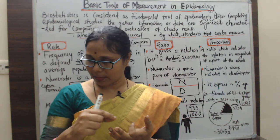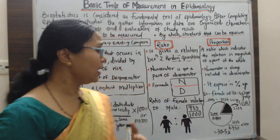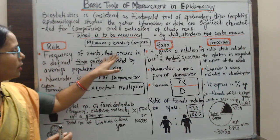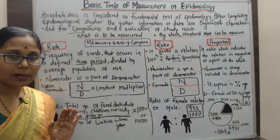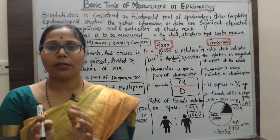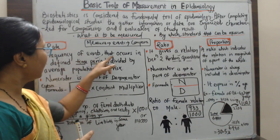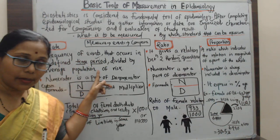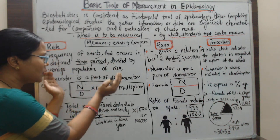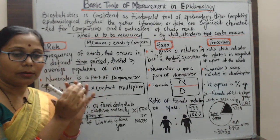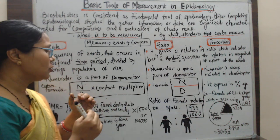The rate is the frequency of events that occur in a defined time period. Since it is a rate, a time factor is always present. It is expressed as the frequency of events that occur in a defined time period divided by the average population at risk. There are two parts: the numerator and the denominator.